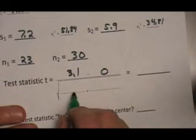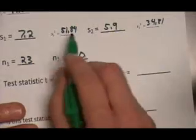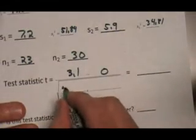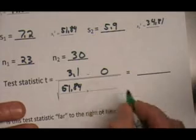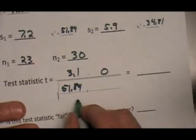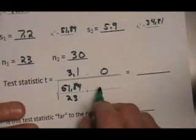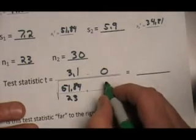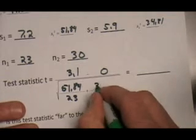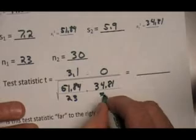My first fraction in the denominator is going to be the variance of the first one, which we have calculated to be 51.84, divided by my sample size of 23. Plus the variance of the second one, which we have calculated to be 34.81, divided by the sample size of 30.